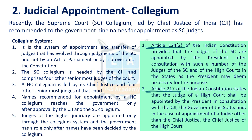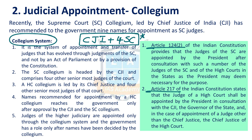In the appointment and transfers of judges to the higher judiciary, there have been many cases — the first judge's case, second judge's case, and third judge's case. In the third judge's case, it was established that the CJI and four senior-most Supreme Court judges together form a group known as the collegium. This group recommends names to the President of India. The collegium system is not mentioned anywhere in the constitution — it came into existence through various judicial interpretations. The word 'collegium' is not in the Indian Constitution. The President appoints from the names suggested, but it is not mandatory that all names given by the collegium need to be cleared or appointed.